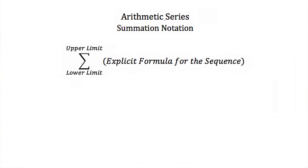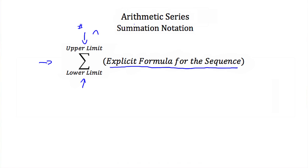The last thing we have to talk about when we discuss arithmetic series is summation notation. Summation notation is usually indicated by this symbol — a sigma, or a 'crazy looking e' — which is the symbol for summation. Typically there is a formula that comes after this summation sign, and when we use a summation for an arithmetic series, we always follow it with the explicit formula for the sequence. Above our summation sign is the upper limit, and below it is the lower limit. For arithmetic series, the upper limit is the number of terms n, and the lower limit tends to be 1 for the first term.